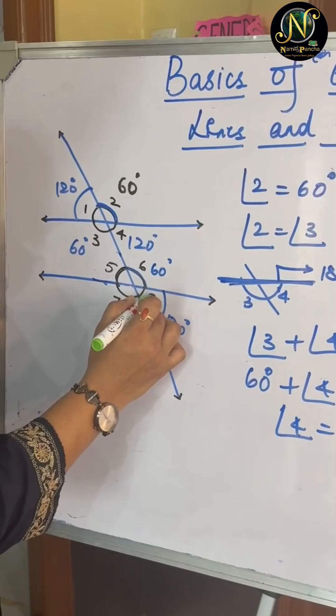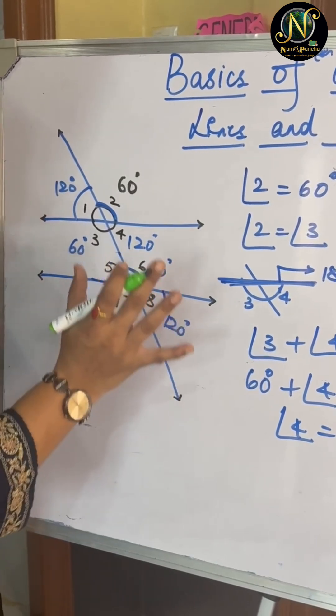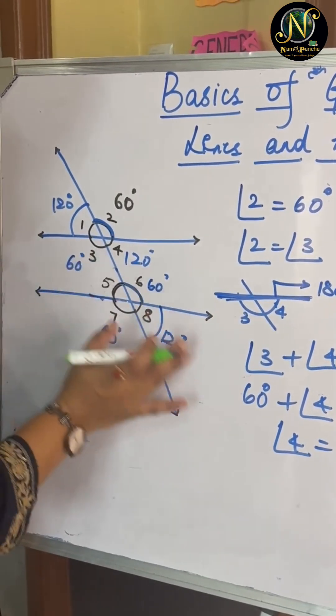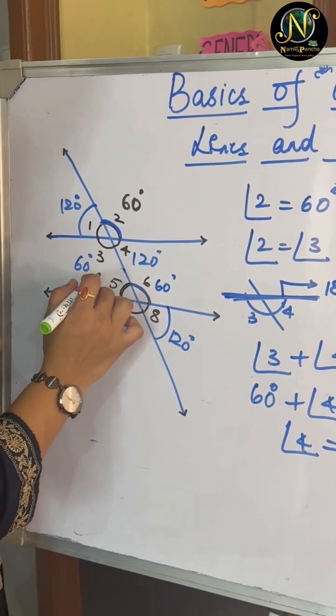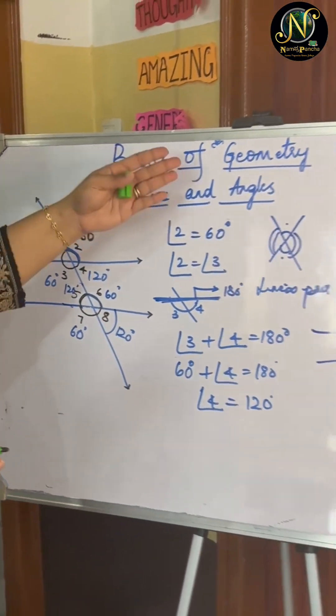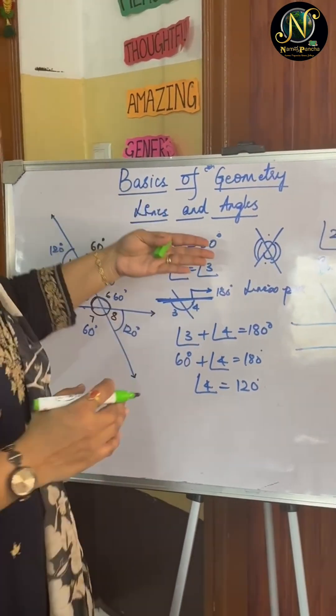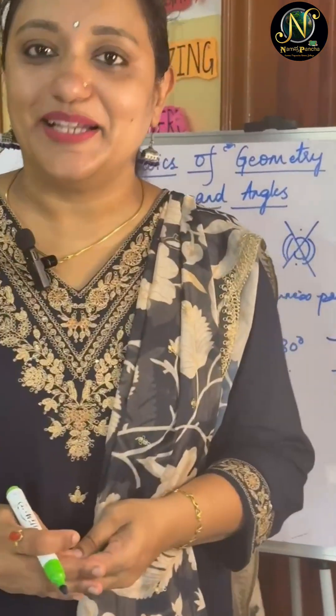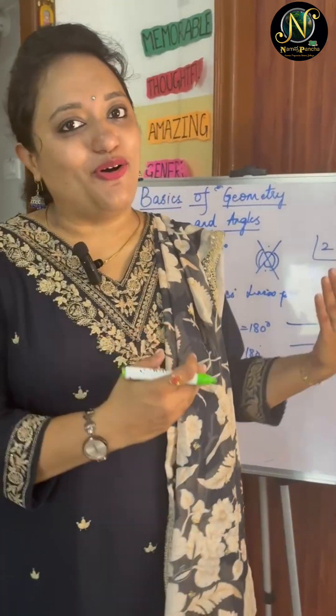Again, using the same concept, angle 8 is 120. So using the same concept of vertically opposite angles, angle 5 will also be 120. This way, using these three concepts of vertically opposite angles, corresponding angles and linear pair, we are able to find all the 8 angles.